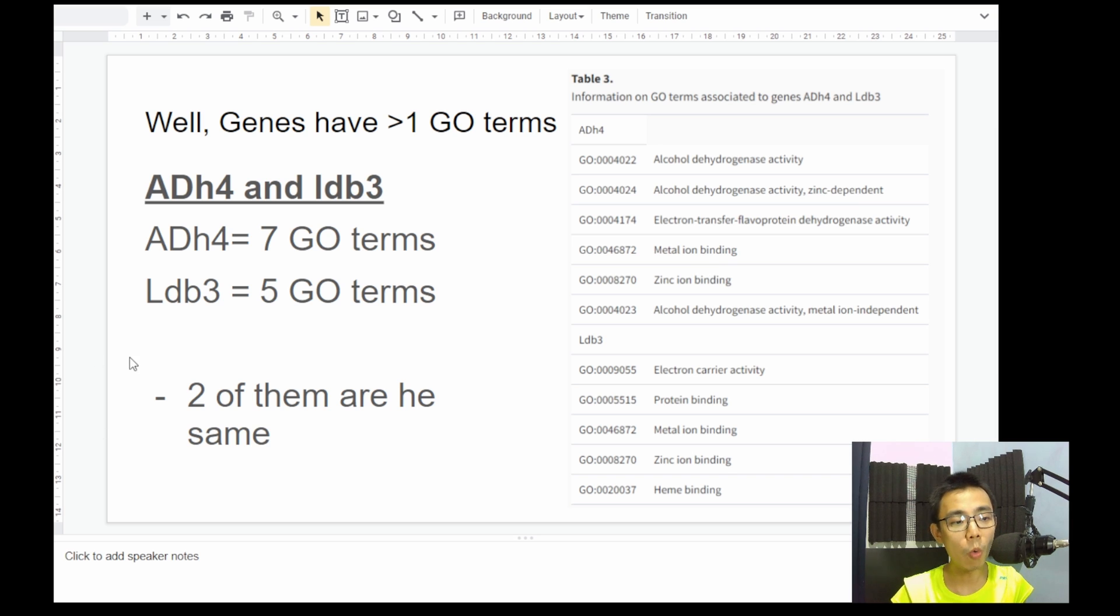So in the old ways, how we actually do is we calculate the total number of GO terms. In this case, there are 12 of them. We take whatever they're the same and we run 2 divided by 12. That's like 0.12 percent, sorry 0.12. So about 12 percent similarity between the two genes. But obviously, it is not really that clear cut most of the time. And an electron carrier activity might be somewhat related to alcohol dehydrogenase activity in some other sense. So the original old way is not as good,